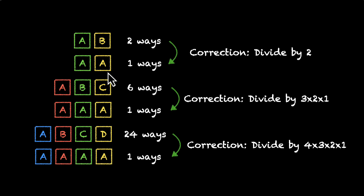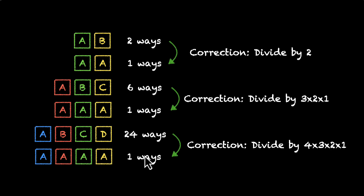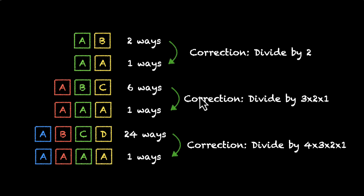In the first case we divide by 2; in the second case, divide by 3 × 2 × 1; and in the third case, divide by 4 × 3 × 2 × 1. You can imagine that if a letter appears, say, 10 times, we divide by 10 × 9 × 8 and so on. Let's now use this to solve a few problems.